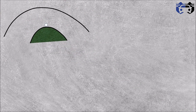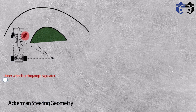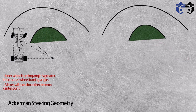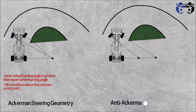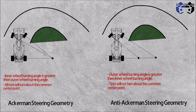Now let's see the Ackermann and anti-Ackermann geometry. Here the car is turning with Ackermann geometry. You can see that the inner wheel is making a greater angle compared to the outer wheel, and all the tires are turning about a common center point. In anti-Ackermann geometry, the case is opposite: the outer tire makes a greater angle compared to the inner tire, and the tires are not turning about a common center point. That's the basic difference between Ackermann and anti-Ackermann geometry.